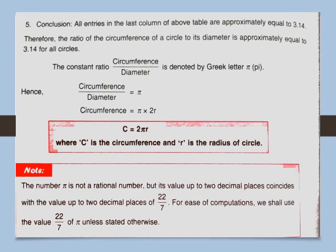The number pi is not a rational number, but its value up to 2 decimal places coincides with the value of 22/7. The decimal division of 22 by 7 also equals 3.1417 and so on. So the value of pi and 22/7 coincide. For calculation purposes, we shall use the value of pi as 22/7 or 3.14 to calculate the circumference of a circle.